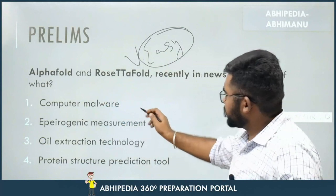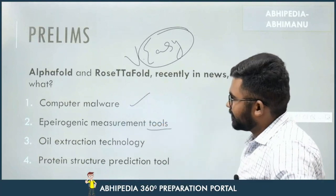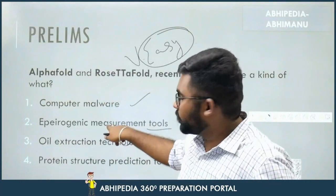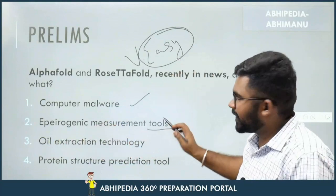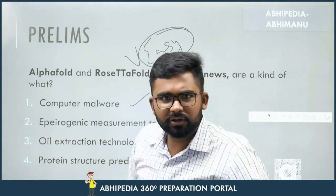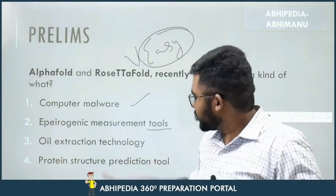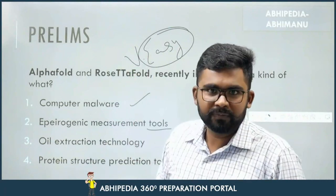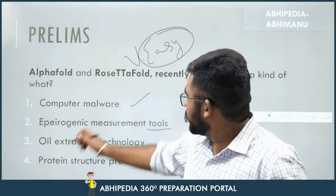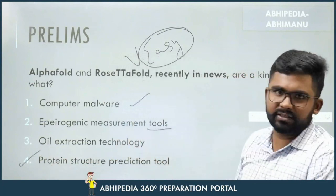You can see the options here. Option A: a computer malware. Option B: aperogenic measurement tools — this is added to confuse you because 'folds' is a geography term. Option C: oil extraction technology — again misleading. Option D: deep sea mining. These confusing options are designed to make you choose the wrong answer. But we know the correct answer: protein structure prediction tool. This is the straightforward answer.